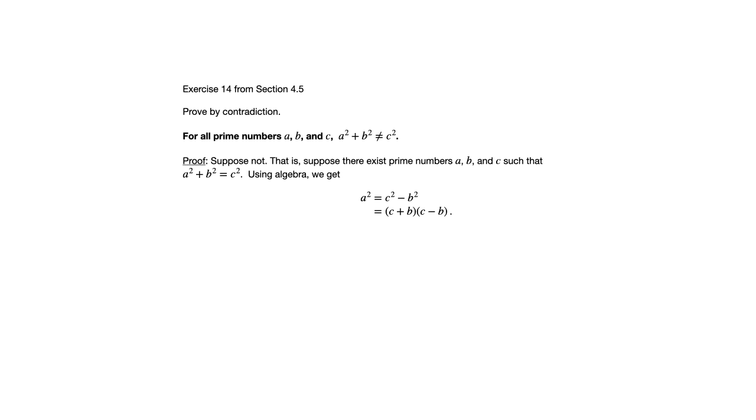Now, one piece of this that is important to recall is the unique factorization theorem. And that says that integers can be factored down into prime factors in only one way, disregarding rearranging the order. A squared is not prime because it's the square of a. We know a is prime, but a squared is not prime.